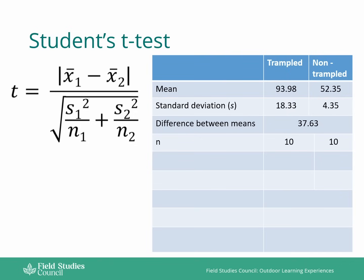You can see here then we've added n. So n for site one is 10 and n for site two is 10. This is because n is just the number of measurements in each sample. The student's t-test doesn't need to have the same number in each sample. Those numbers could be different depending on how many measurements you had for each data set.